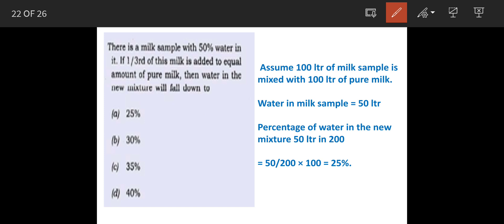Assume that 100 litres of milk sample is mixed with 100 litres of pure milk. This one had 50 litres milk and 50 litres water added with 100 litres of pure milk. Water in this sample will be 50 litres.